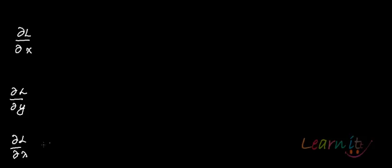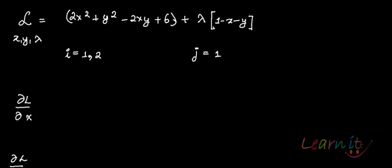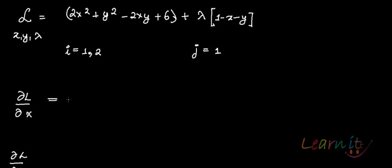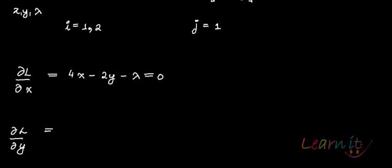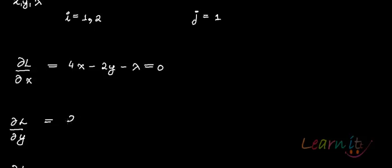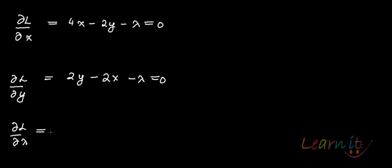You'll find del L / del y — one for each variable — and then del L / del lambda. So what is del L / del x? In this case it will be 4x - 2y - lambda = 0. What is del L / del y? It will be 2y - 2x - lambda = 0. And what is del L / del lambda? That is 1 - x - y = 0.